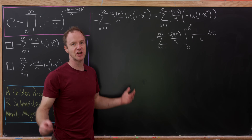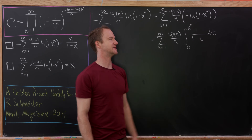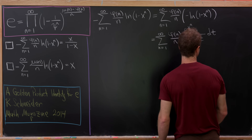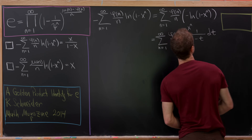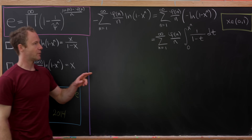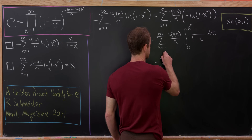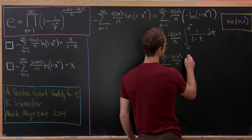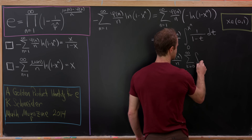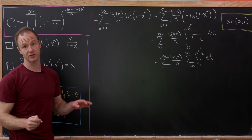Taking the antiderivative via the chain rule gives negative natural log of 1 minus t, evaluated between 0 and x to the n. We'll only need x between 0 and 1 for our purposes. Next we expand 1 over 1 minus t as a geometric series, giving the sum as k goes from 0 to infinity of t to the k. We also exchange the order of summation and integration, which is allowed here, leaving us with the integral from 0 to x to the n of t to the k dt.